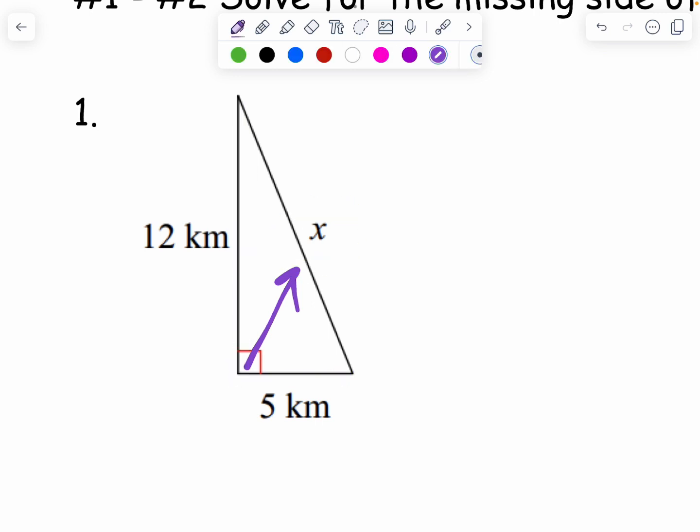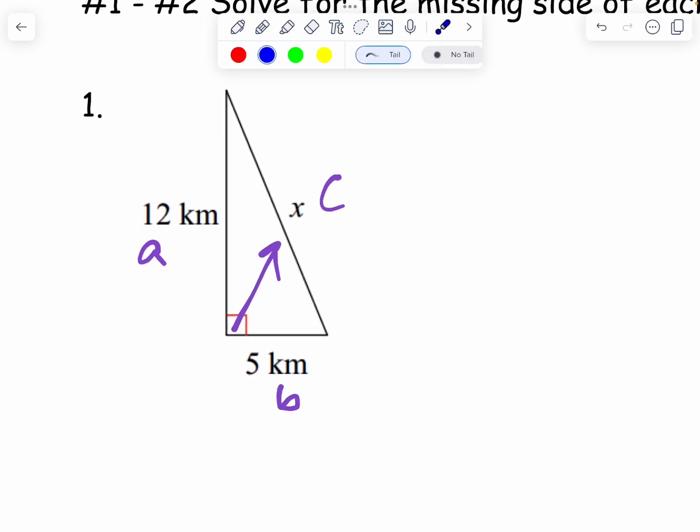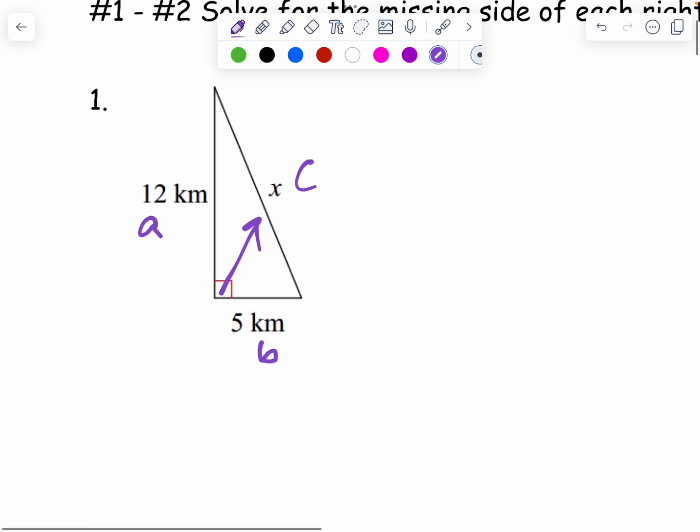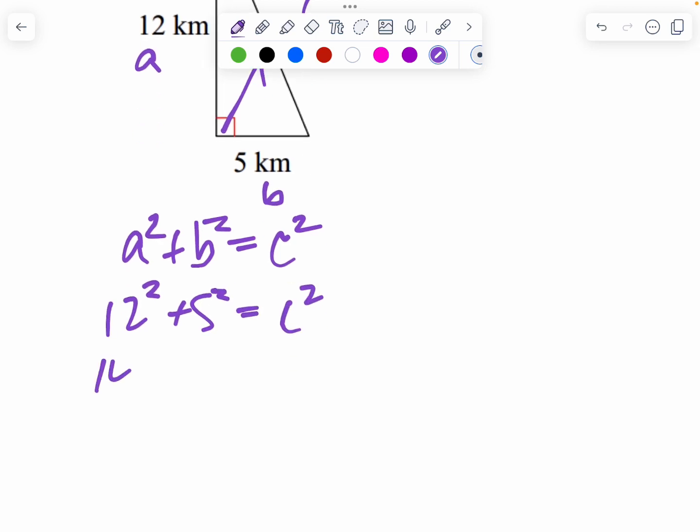So remember all of these kind of start the same way. We're going to mark the C side and then the A and the B. You can switch the A and the B if you want to. The C has to be the hypotenuse, which is across from the right angle. I'm going to write my formula and I have a 12 by A and I have a 5 by B so I'm going to plug in 12 and 5. I am going to square 12, it's 144. Make sure you're doing 12 times 12 or 12 squared, not 12 times 2.